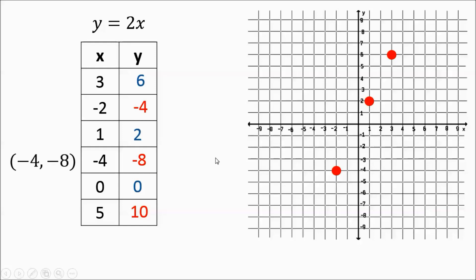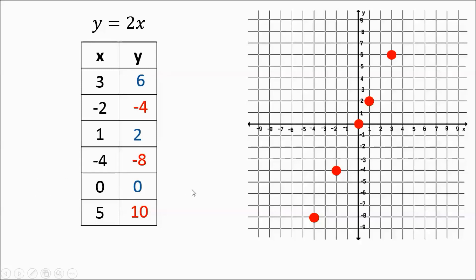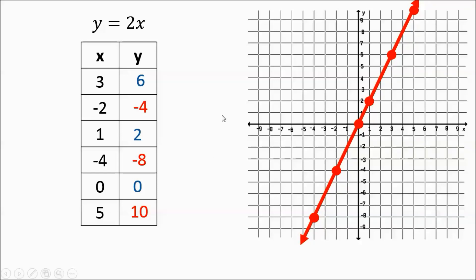Negative 4, negative 8 — that's going to be left 4, down 8 — it's going to be over here. And then we have 0, 0, which is right on the origin. 5, 10 — we're going to go right 5, up 10 — and that's going to be way up there in quadrant 1. You know you're doing this right if all of your graphed points fall along the same line. And in this case they do, so that's cool — everything's looking good.